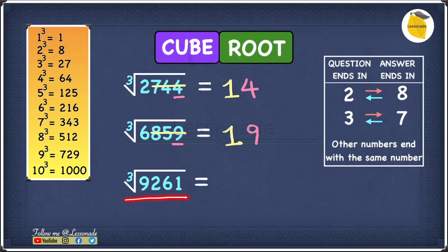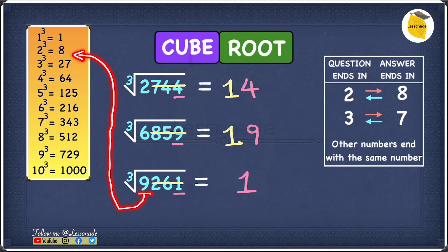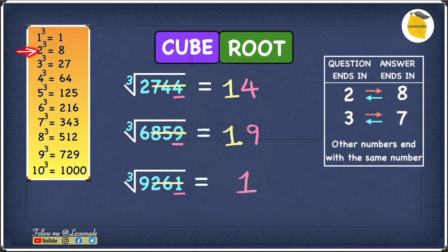Now let's have a look at another example: cube root of 9261. Let's start with the last digit, which is 1. Since 1 is in the category where other numbers end with the same number, our answer will also end with 1. Cross out the last three digits — 2, 6, 1 — and we're left with 9. The 9 fits in between 8 and 27, so between 2 cubed and 3 cubed. Since 2 cubed is smaller, our answer starts with 2. So our answer is 21.